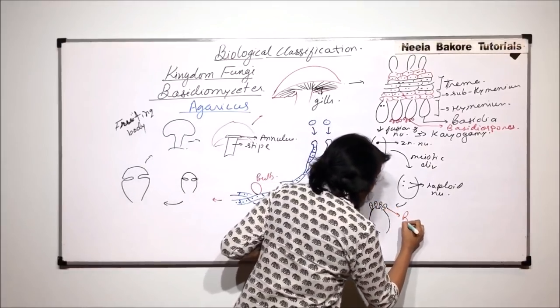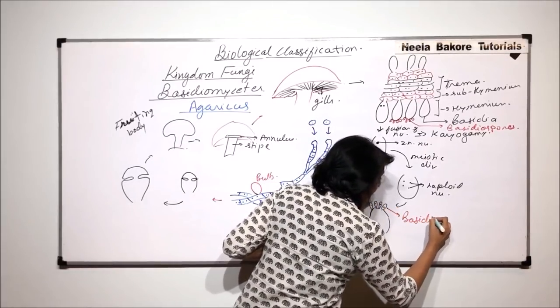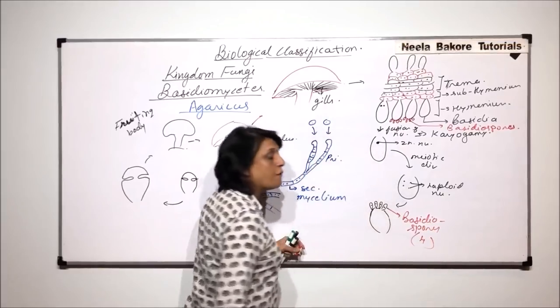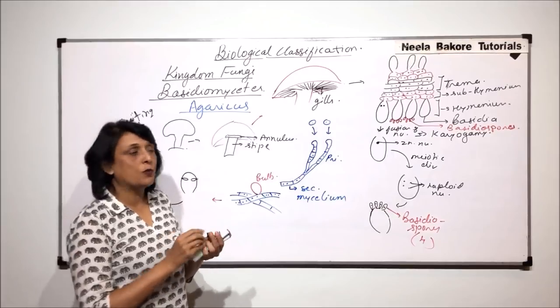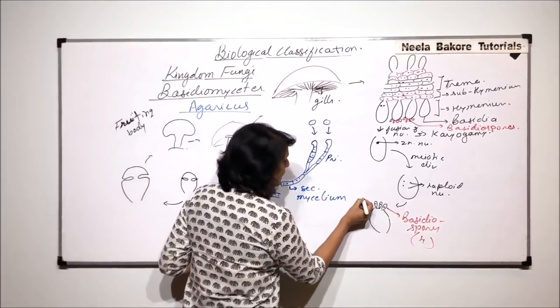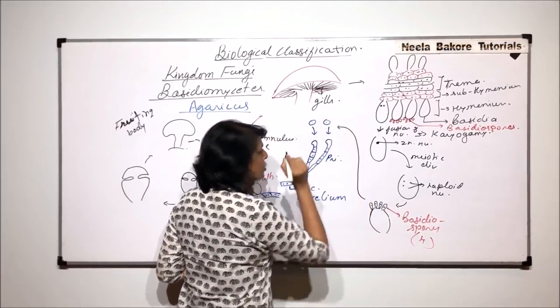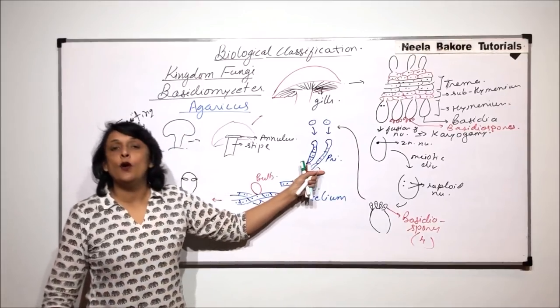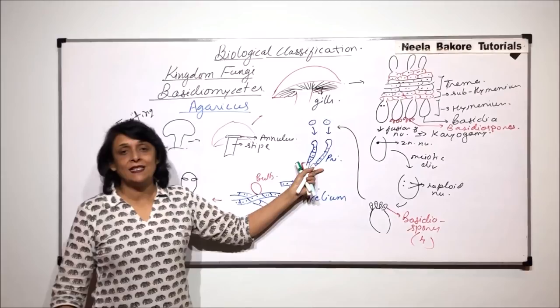These are the baesidiospores. And they are always four in number. When the spores are fully formed, they are released and the spores are again going to germinate to form primary mycelia, which will fuse to form the secondary one.